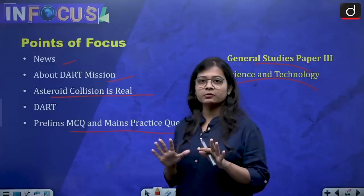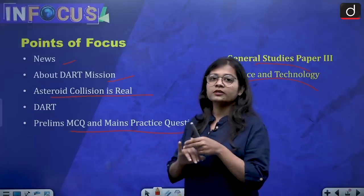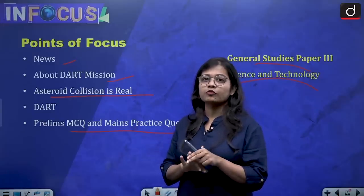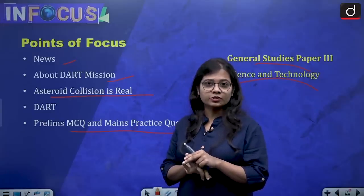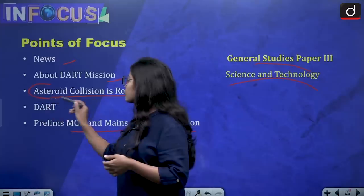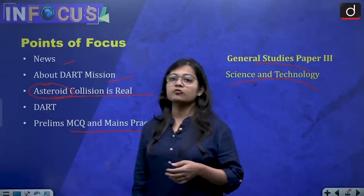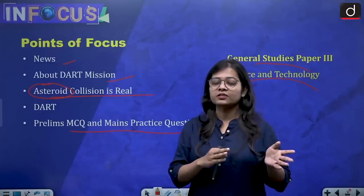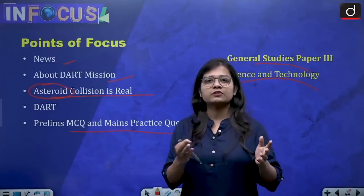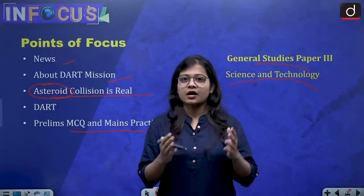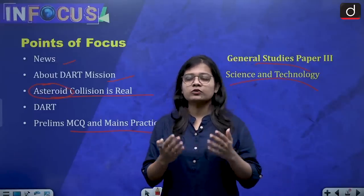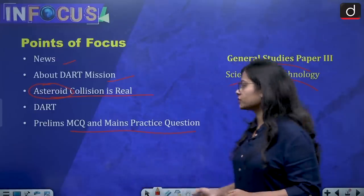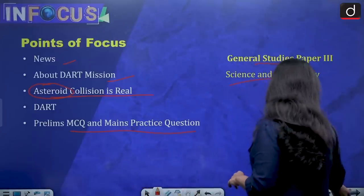From an exam perspective, you should be able to know which country the DART mission belongs to, what the DART mission is, and the name of the asteroid involved. Because many times we have seen that in previous year questions, UPSC has asked about asteroids and the country involved in the mission. This topic is relevant for General Studies Paper 3, that is Science and Technology.